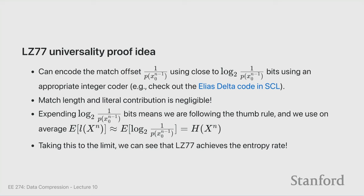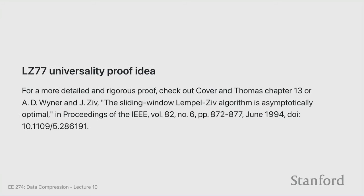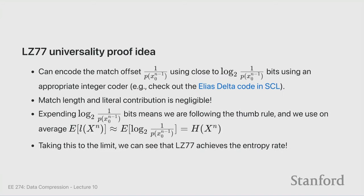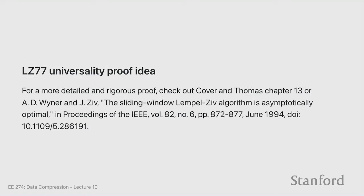However, in practice LZ77 does very well on real data, not just on kth order Markov processes. The reason is the world is not really a kth order Markov process. English text has far longer repeats — a person's name in a text will repeat many times, which a kth order Markov process can't model well. That's why we saw last time that kth order models are beaten by LLMs by a wide margin, because LLMs model the data in a much better way.